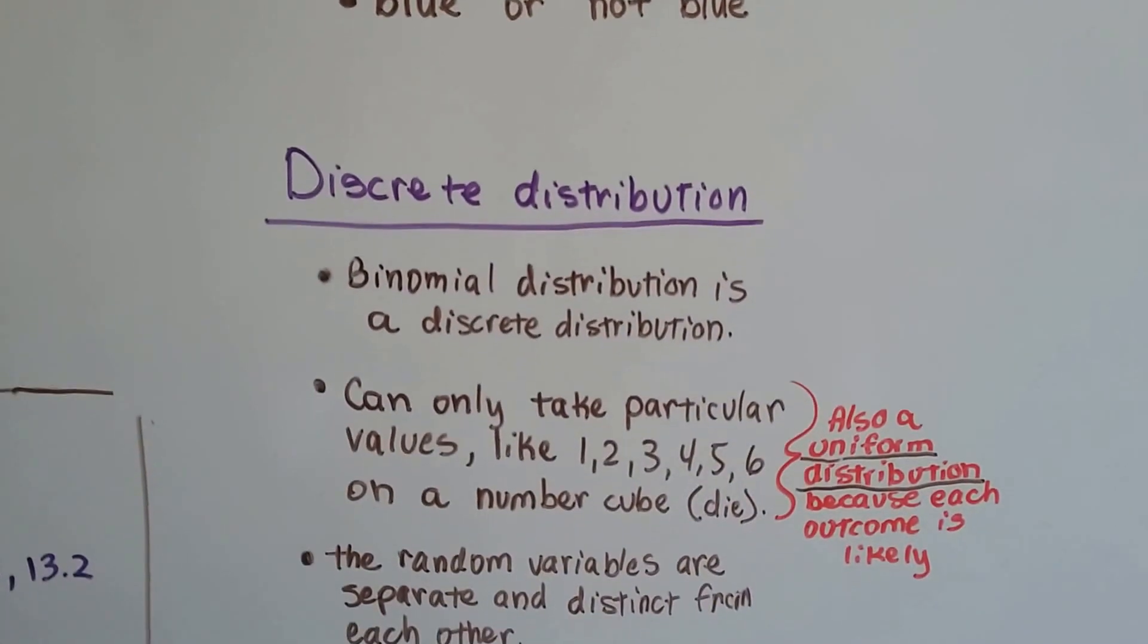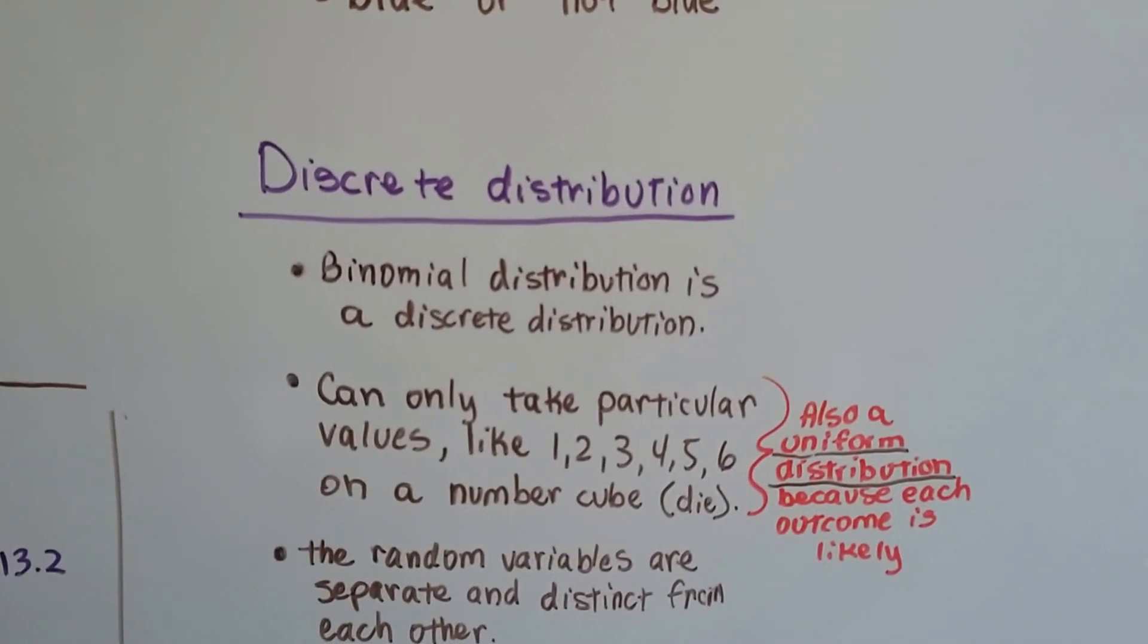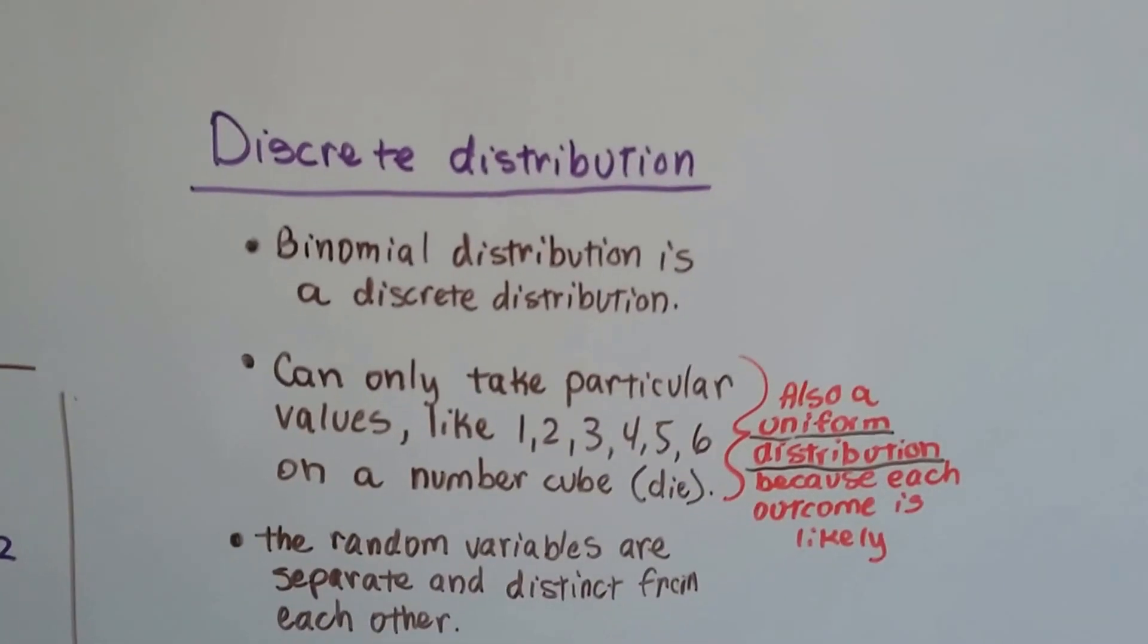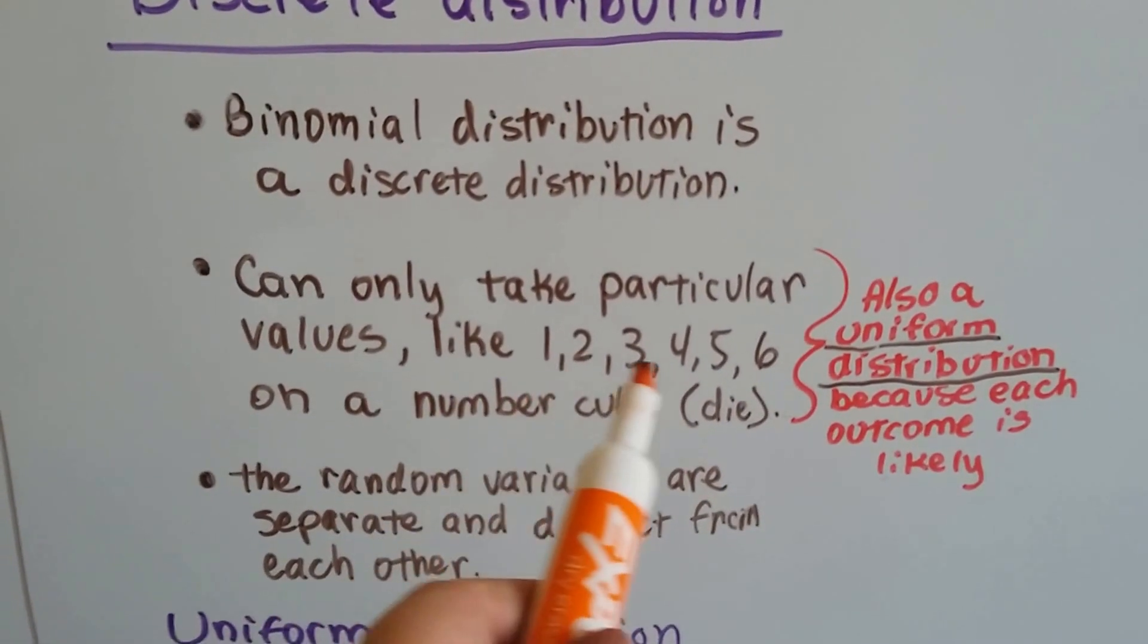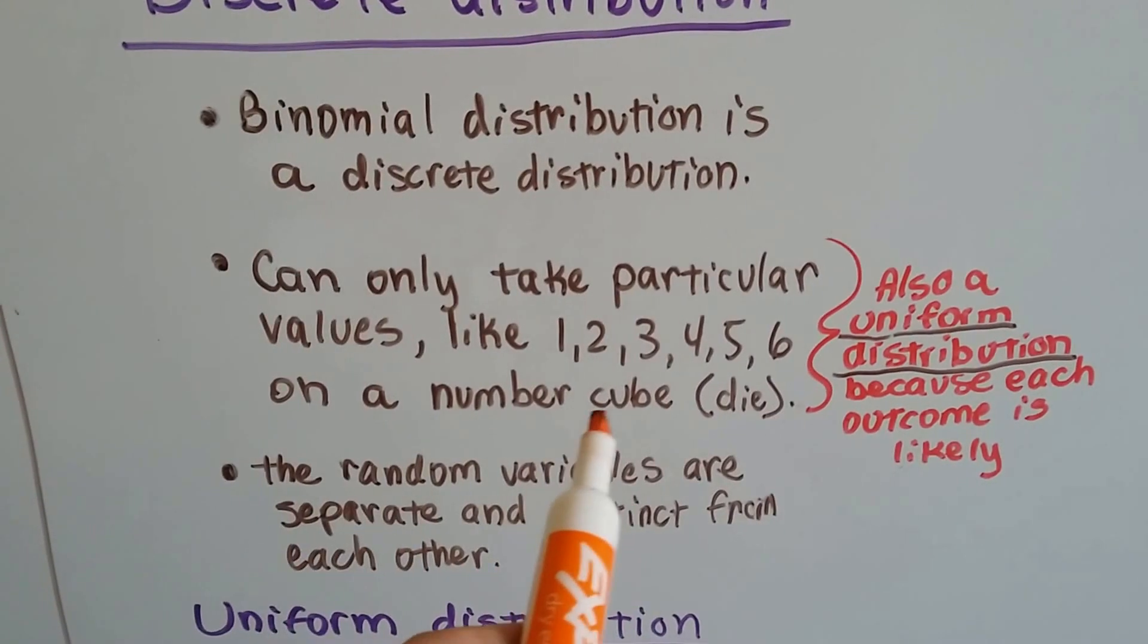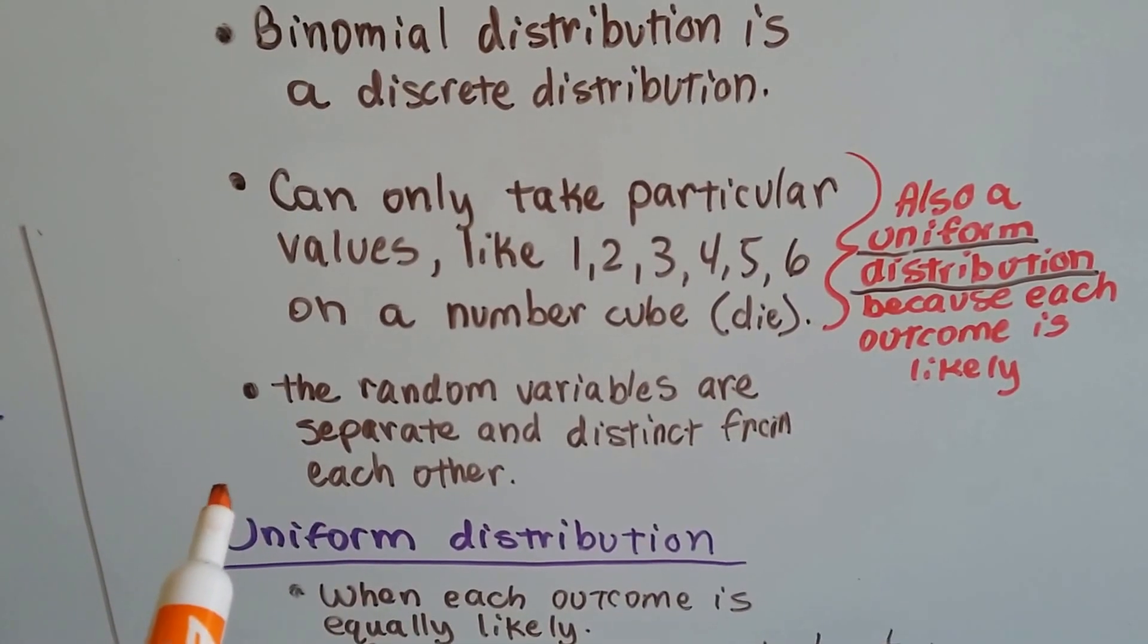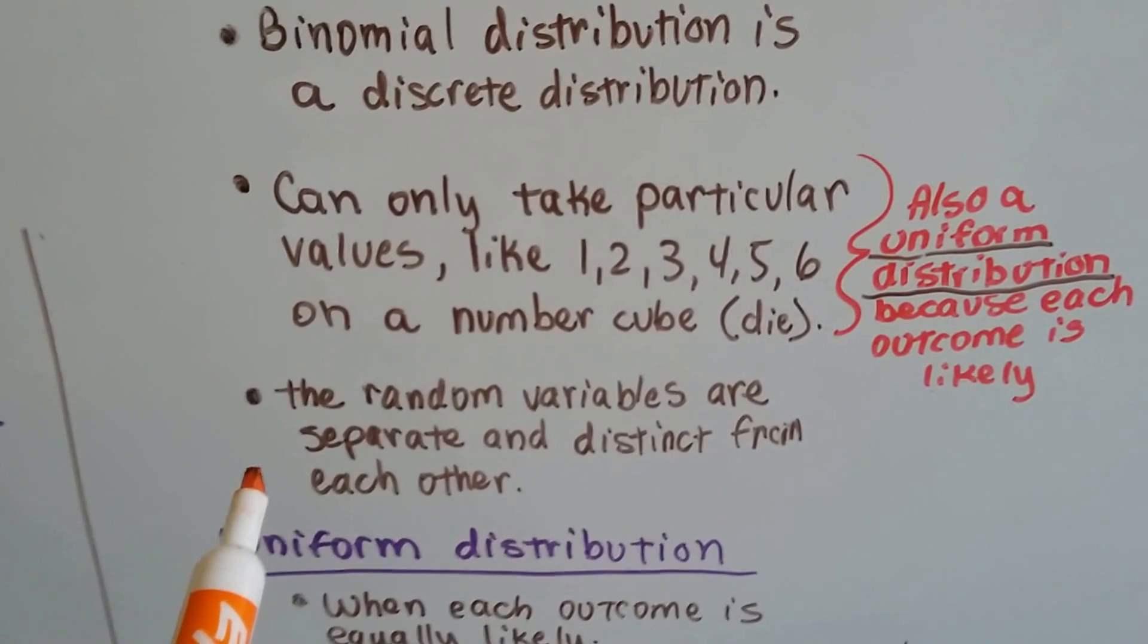There's discrete distributions. Binomial distributions are considered discrete ones, and they take a particular value like 1, 2, 3, 4, 5, or 6 on a number cube, on a die. And the random variables are separate and distinct from each other.